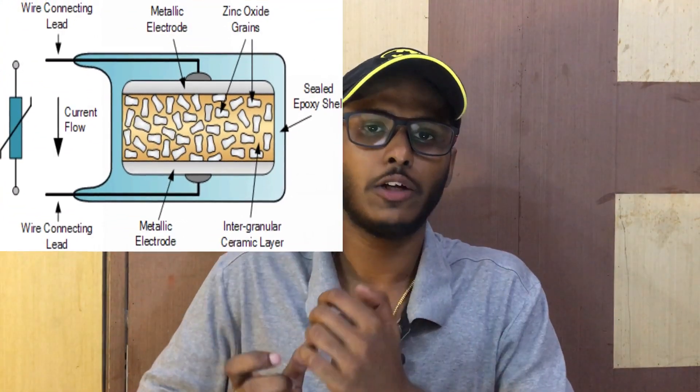The key component used for surge protection is called MOV — Metal Oxide Varistor. It is a small component. It is not a fixed resistor and not a manual variable resistor, because a variable resistor is adjusted manually. The MOV is a type of variable resistor, but it operates automatically based on voltage.